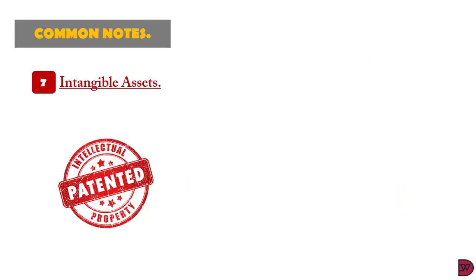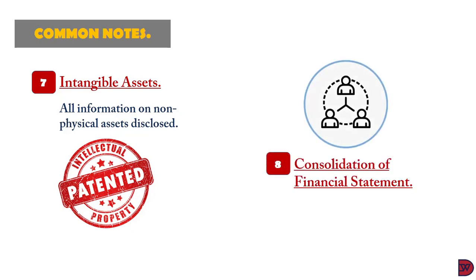Seventh, intangible assets. If a business has any non-physical assets, there must be a section in the notes detailing the various assets and their valuation. Any impairments necessary will also have to be captured in the income statement. Eighth, consolidation of financial statements. This section confirms that the statement being issued contains financial statements of all subsidiaries or associates and explains how it accounts for them.